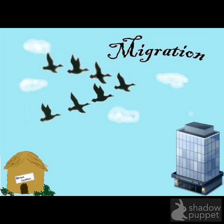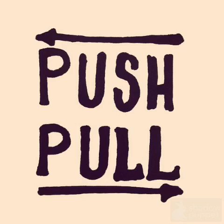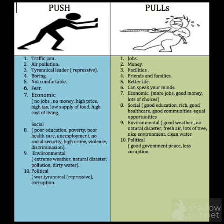Once we start breaking down the population into different groups and subgroups, we can look at migration — why are people moving, and why are they settling in the places they are? The factors that affect this are called push-pull factors. Push factors are the things that make you want to leave a place, and pull factors are the opposite — they're the things that draw you to a place.